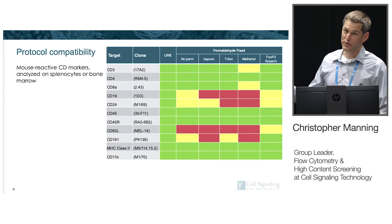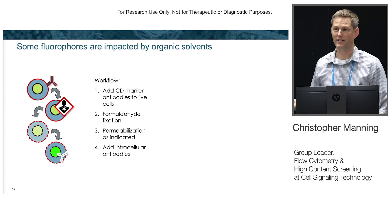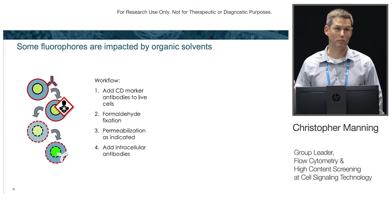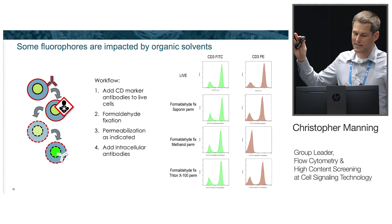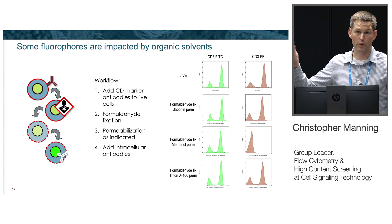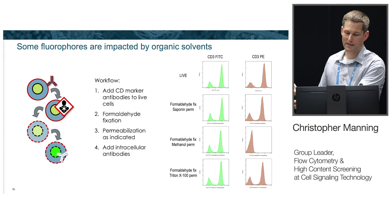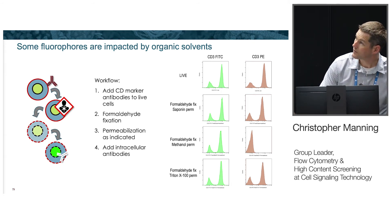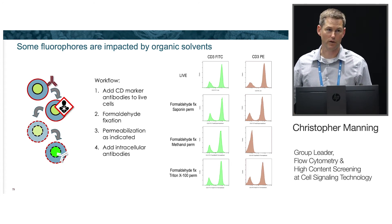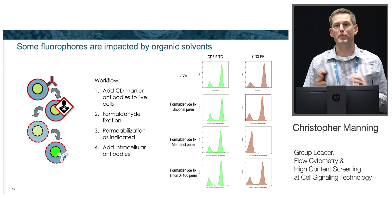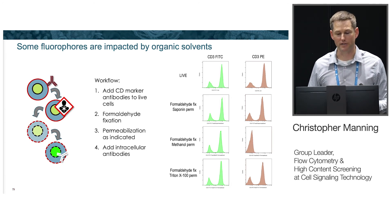One last point: if you add CD marker antibodies ahead of time, be aware that different fluorophores are sensitive to solvents. Methanol will denature protein-based fluorophores like PE and APC, causing loss of signal. For example, CD3-FITC and CD3-PE added to cells first, then fixed and permeabilized with methanol — you entirely lose signal with the PE fluorophore after methanol exposure. So if you add antibodies first and then permeabilize with a solvent, make sure you're not using fluorophores that will be destroyed in the process.